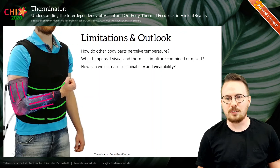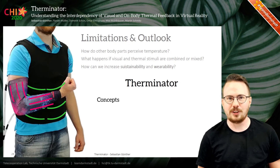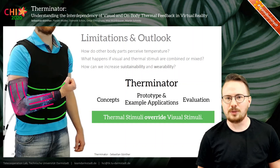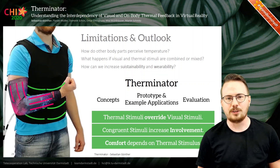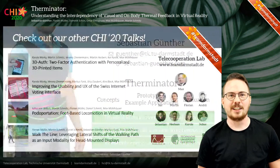In conclusion, I presented Therminator: a set of concepts and design considerations, a prototype along with three example applications, and a systematic evaluation investigating the interdependency of thermal and visual stimuli, where we found that thermal stimuli always override visual stimuli, congruent stimuli increase involvement, and comfort depends on the thermal stimulus. Thank you for your attention — if you have any further questions or comments, feel free to contact me directly. Also check out the other great CHI 2020 talks by my colleagues from the Telecooperation Lab. Thanks, and stay healthy.